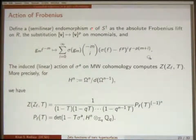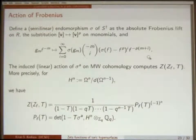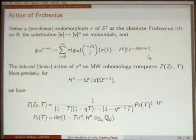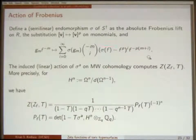If you take S† and invert p and take the continuous de Rham complex relative to the fraction field of Z_Q — where Z_Q is the unramified extension of Z_p with residue field F_Q, and Q_Q is its fraction field — then the cohomology of the de Rham complex is called Monsky-Washnitzer cohomology. It receives a trace formula as follows: if I define a Frobenius lift on S† — it's going to be semi-linear — there's an endomorphism of Z_Q lifting the p-power map, the absolute Frobenius lift.